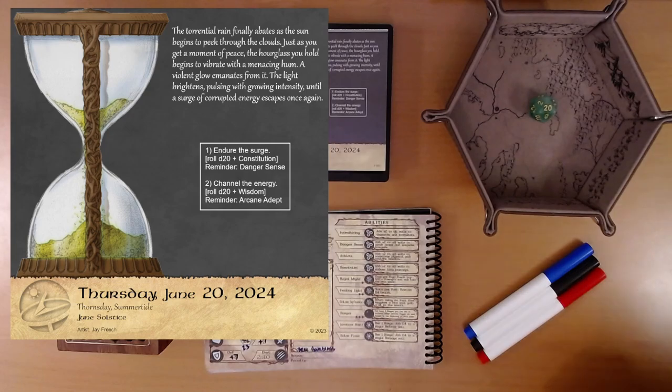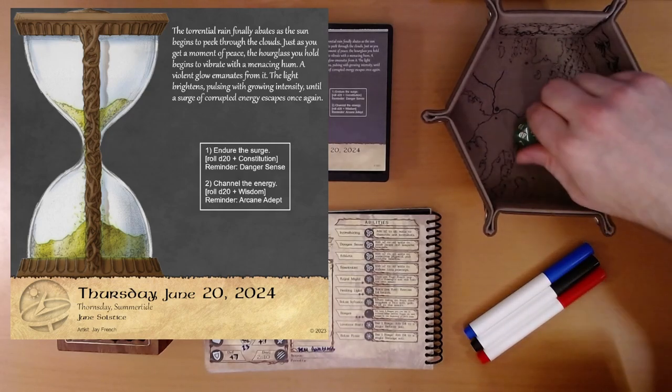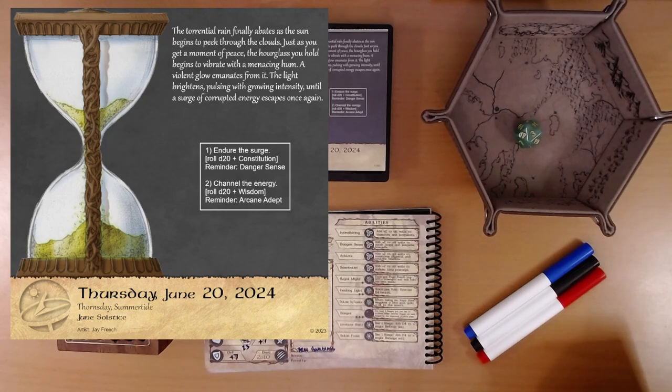Okay. So here's our Wisdom roll. Three. Three plus two is five. There's no way we're getting this. We need to get it above 14. We need a 15 or better to resist the curse.